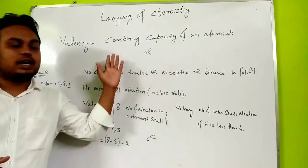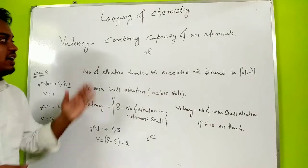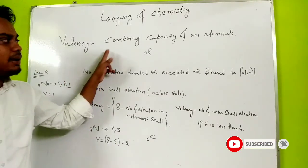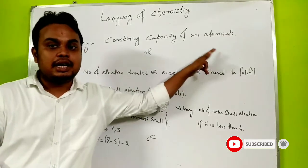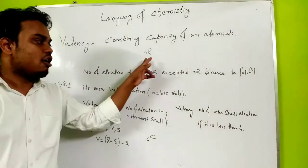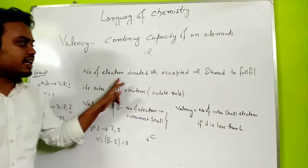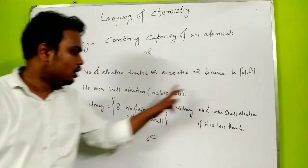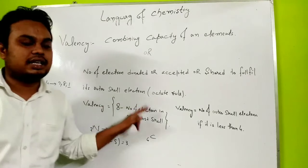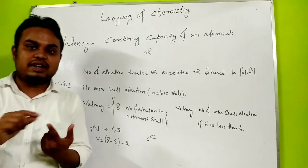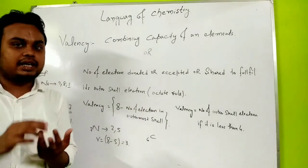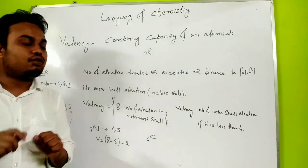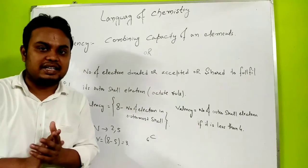What is Valency? Valency is the combining capacity of an element, or the number of electrons donated, accepted, or shared to fulfill its outermost shell electron. The number of electrons accepted, donated, or shared by an element to fulfill its outermost shell electron is called Valency.